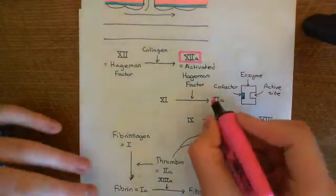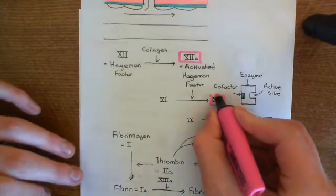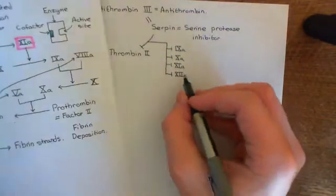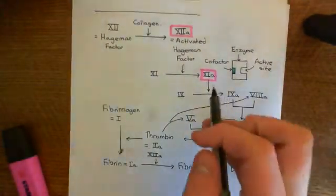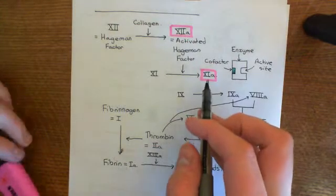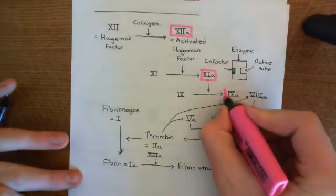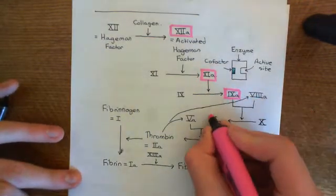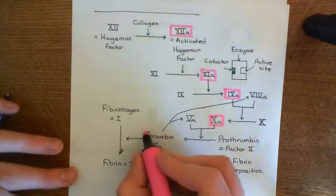In addition, antithrombin-III is going to inactivate factor 11A. So if any 11A is being formed, it will inhibit that. It also inactivates factor 9A and finally factor 10A as well — pretty much every step of the coagulation pathway.